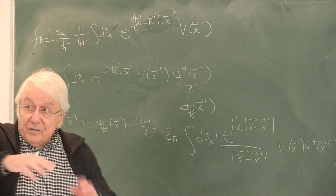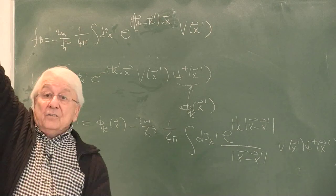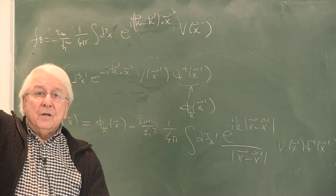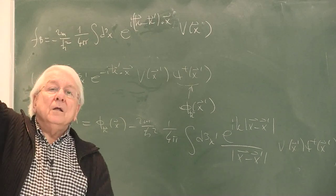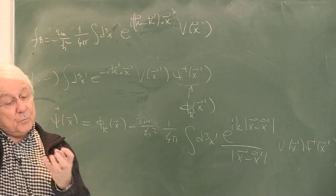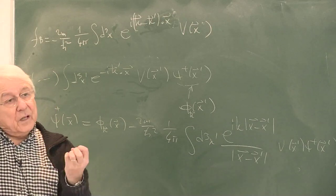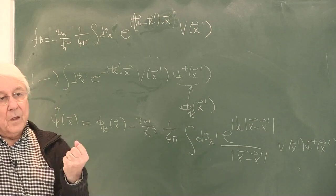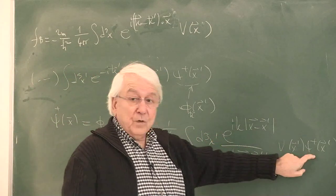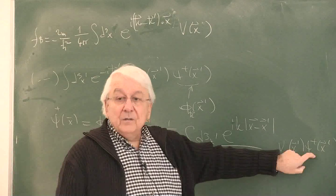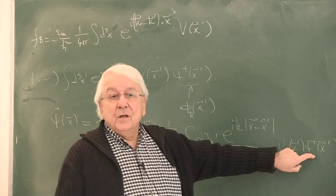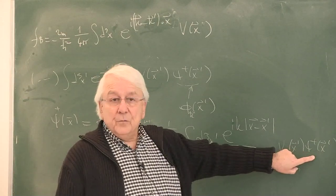Because the approximation involved the detector being at very far distances, and the potential is localized to nuclear sizes. But if I have to carry out this approximation by replacing this in the potential region, then I have to look at the full equation — the exact equation. The approximate equation is not good for that.